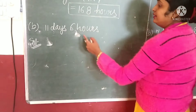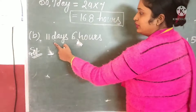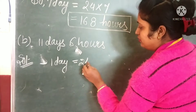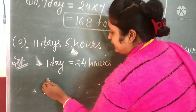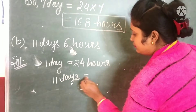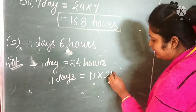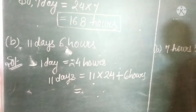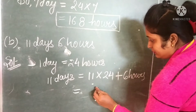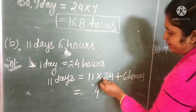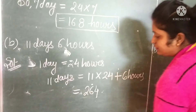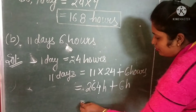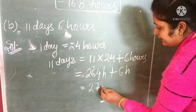Next is 11 days 6 hours. The 6 is already in hours, so we only need to convert 11 days. 1 day equals to 24 hours. So 11 multiplied by 24: 11 times 4 is 44, carry 4; 11 times 2 is 22, plus 4 is 26. That gives 264 hours, plus 6 already in hours. So our answer is 270 hours.